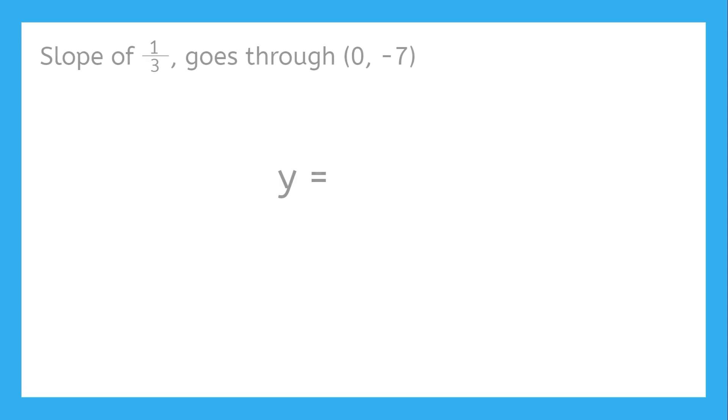Slightly harder one now. If a line has a slope of one-third and goes through the point (0, negative 7), what is its equation? The slope is 1 over 3, so in our equation, x will be multiplied by 1 over 3. And even though the problem doesn't call it the y-intercept, we know that the point (0, negative 7) must be the y-intercept because the x-coordinate is 0. So the y-intercept is negative 7. Since we're adding a negative number, we can actually rewrite that to just minus 7.